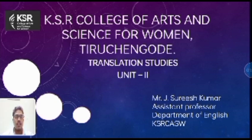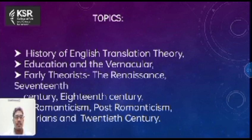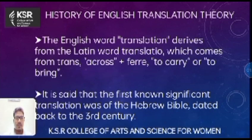Today we are going to see a Translation Studies paper from BA English 6th Semester, Unit 2. The Unit 2 covers the history of English translation theory, education and vernacular, early theory and Renaissance, 17th century and 18th century, Romanticism, Post-Romanticism, Puritans and Victorians, and the 20th century.